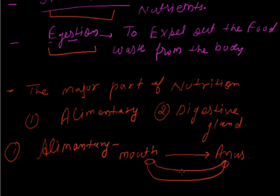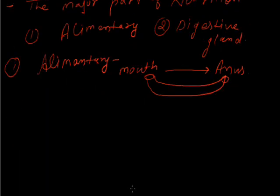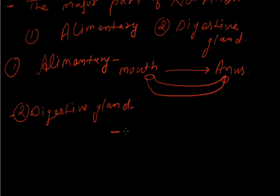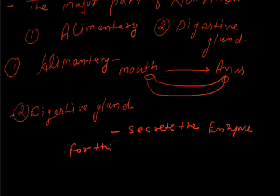This pipe from mouth to anus is known as the alimentary canal. The second part is the digestive glands — these are glands that secrete enzymes for digestion. Enzymes are agents that increase the rate of reaction, are a form of protein, and are very important inside our body for digestion of food particles.